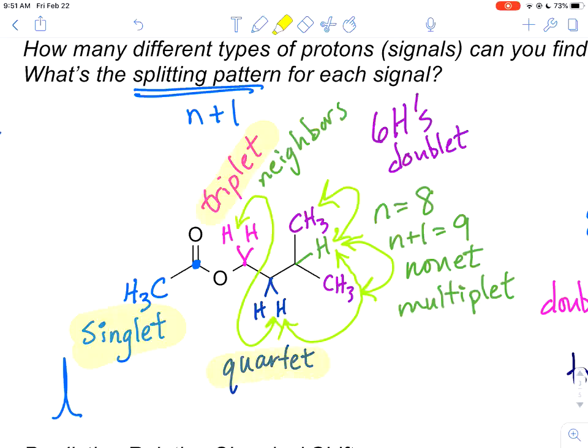which was distinct from this other CH2 quartet. Then we had a non-net, which is going to turn out to be a multiplet, just like a lot of peaks for the green team, that CH signal. Then finally, a doublet for the six hydrogens of these two methyl groups.